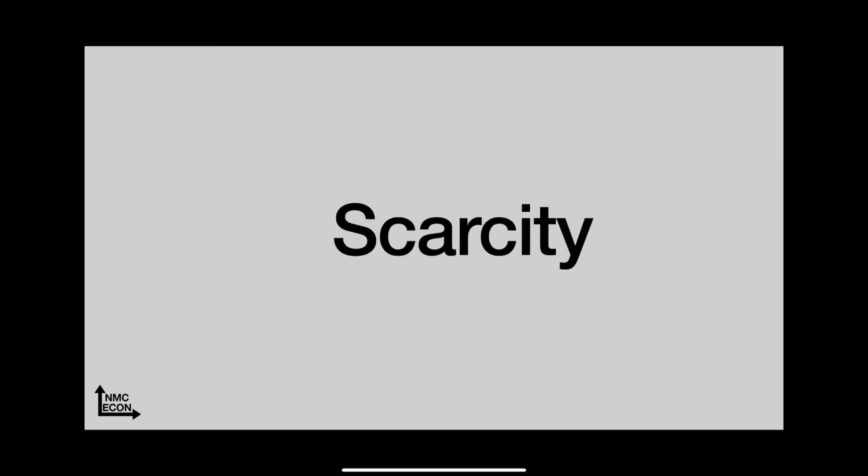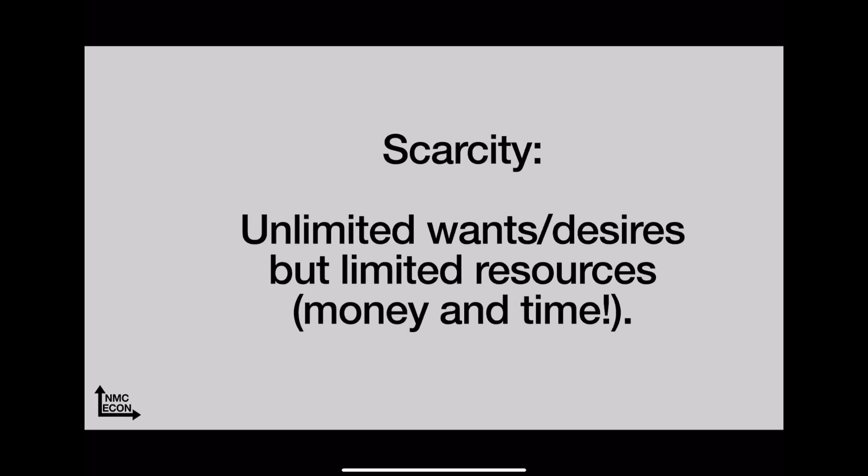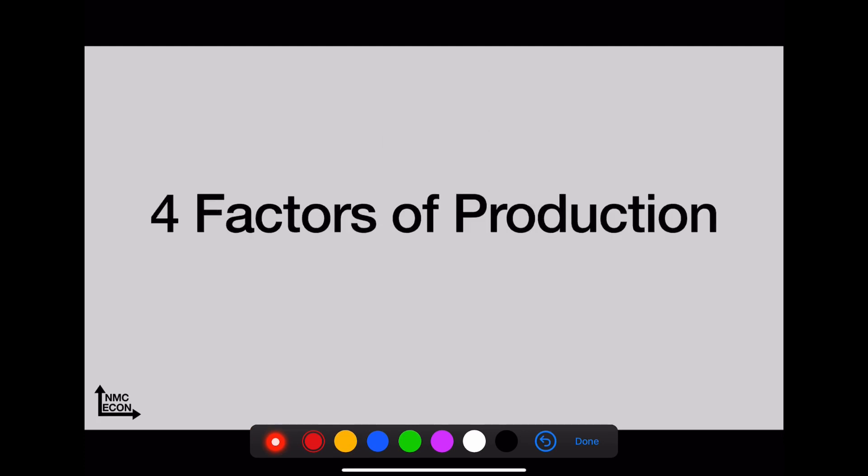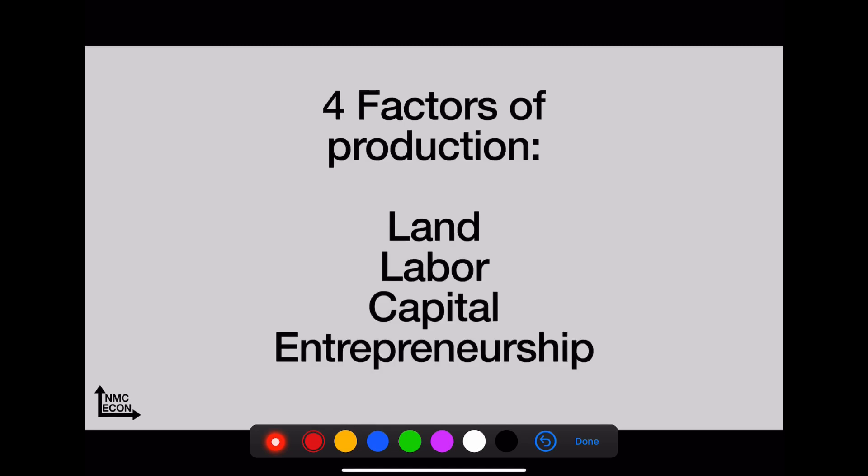Scarcity—we have unlimited wants and desires but limited resources. Two big ones here are money and time. We don't have enough of both. Four factors of production: land, labor, capital, entrepreneurship. Entrepreneurship is like business smarts—think about Steve Jobs or Elon Musk or Oprah.